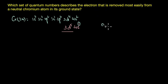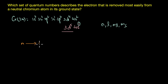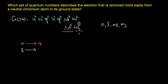The set of quantum numbers describing an electron's position and behavior is given by n, l, ml, and ms. The principal quantum number n describes the energy level — for the 4s orbital, n equals 4 because the electron is in the fourth shell. The quantum number l determines the shape of the orbital; the 4s orbital is spherical, corresponding to an s orbital, so l equals zero.